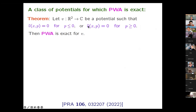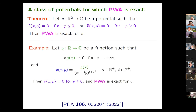Another class of potentials for which the approximation is exact: if the Fourier transform of v with respect to y vanishes on the negative (or positive) half-axis, then the approximation is exact. The proof is subtle but not very difficult; full details are in the paper. For example, taking an arbitrary short-range function of x and a function of y whose Fourier transform vanishes on the negative half-axis gives a complex potential for which the approximation is exact.